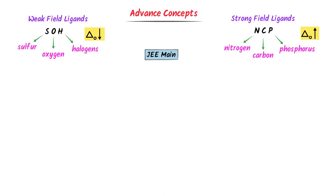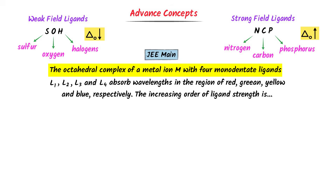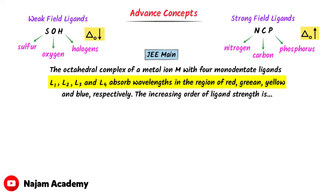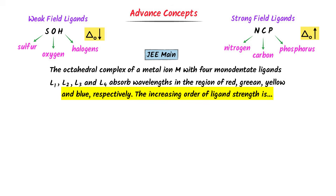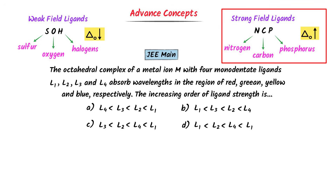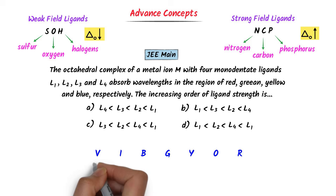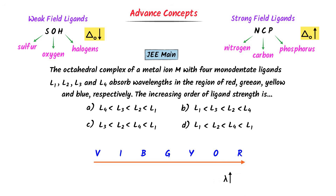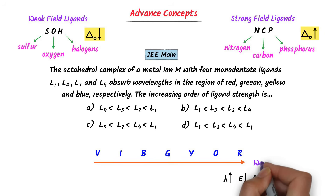Consider this JEE Main question: the octahedral complex of a metal ion with four monodentate ligands L1, L2, L3, and L4 absorbs wavelengths in the region of red, green, yellow, and blue respectively. The increasing order of ligand strength is ___. We know that a strong ligand causes larger splitting of d-orbitals. Writing VIBGYOR from left to right, wavelength increases and energy decreases. Smaller energy causes smaller splitting; larger wavelength means weaker ligand.